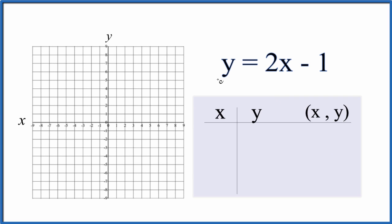Let's graph the linear equation y equals 2x minus 1. We'll use a table of values, and then we'll look at slope-intercept formula.